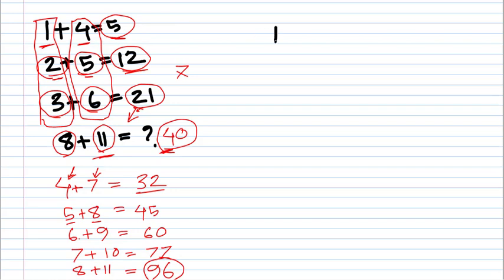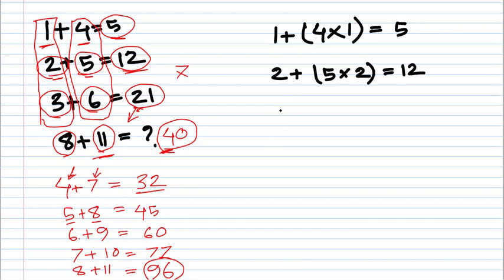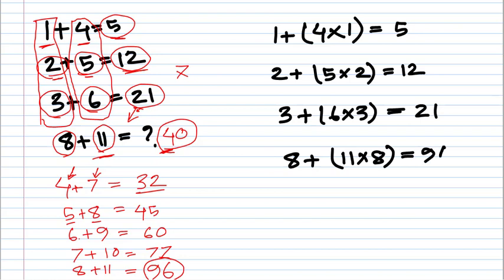We can use a simple formula: 1 plus 4 times 1 is equal to 5. 2 plus 5 times 2, the result is 12. 3 plus 6 times 3, the result is 21. And by that we can write 8 plus 11 times 8. The result is 96.